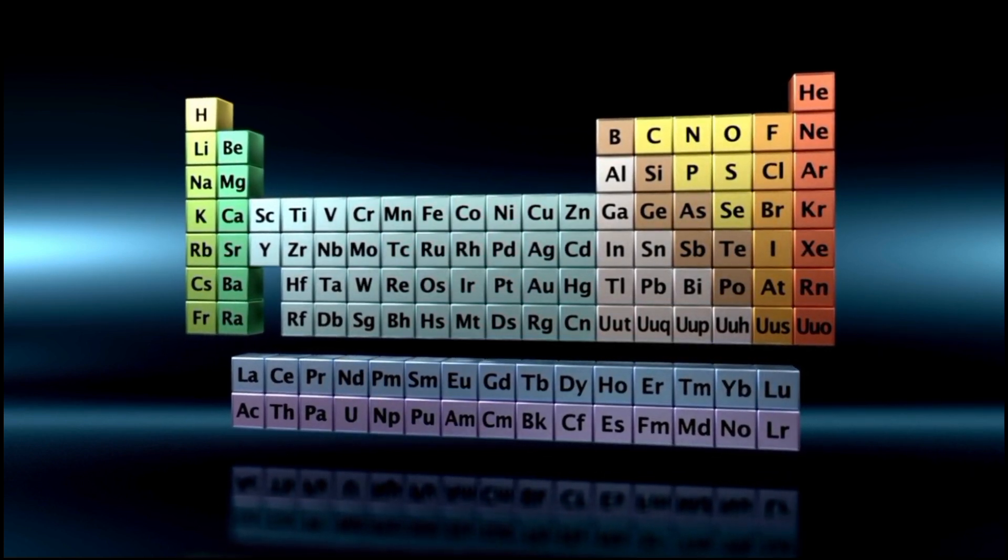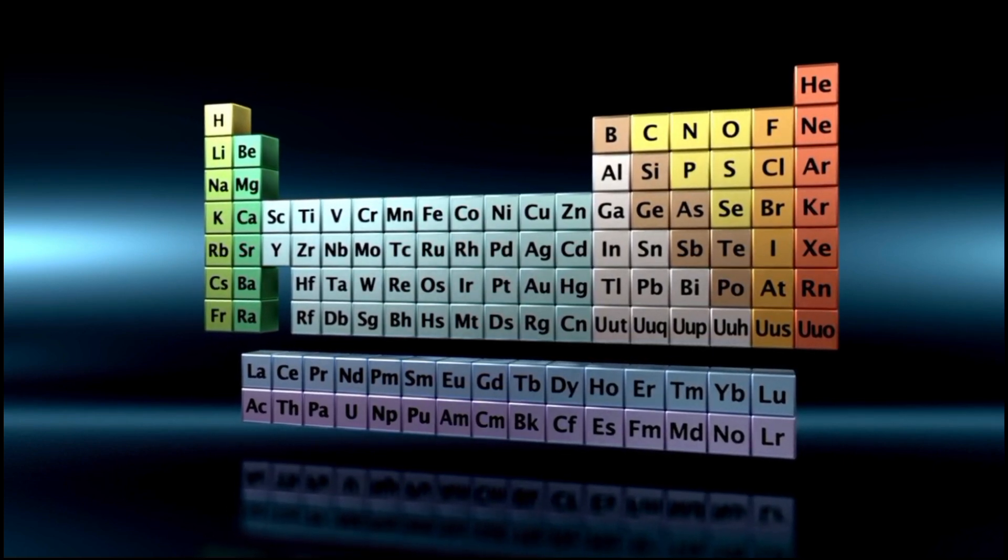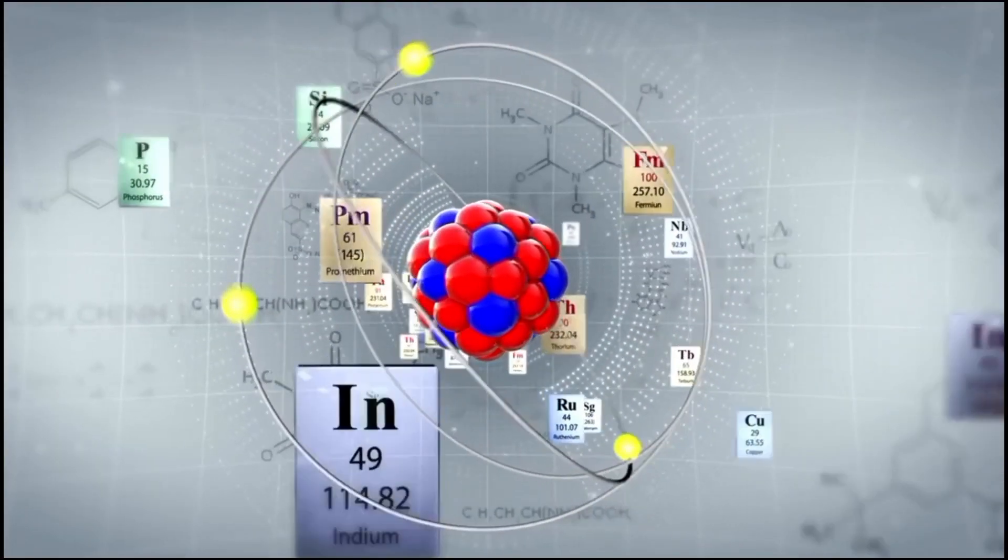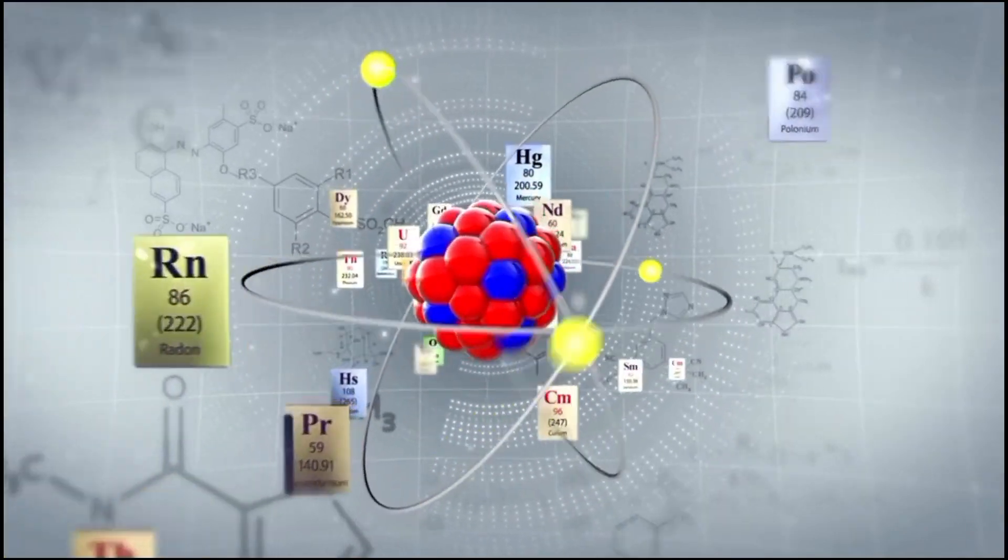At the heart of the periodic table lies the concept of atomic number. This unique identifier represents the number of protons in an atom's nucleus and defines an element's chemical identity.